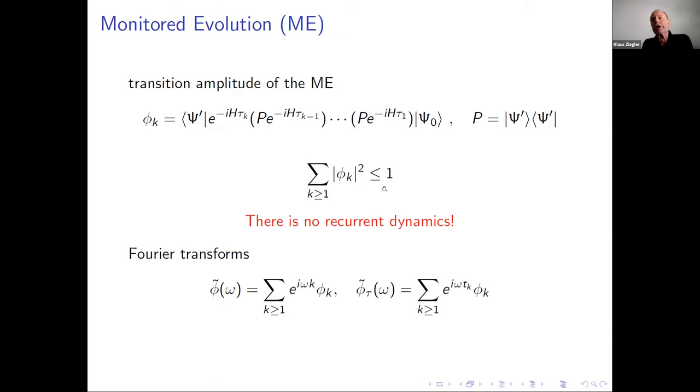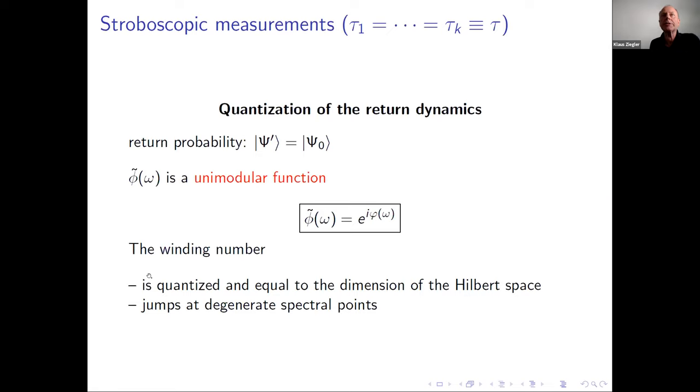In order to study this situation, we introduce the Fourier transformation of this amplitude. The interesting point, which was already observed in this early work by Grünbaum et al., is that this Fourier transform amplitude is a unimodular function - it just has a phase. The phase is a winding number, a many-valued function. It is quantized interestingly. If we go around with omega from zero to 2π, we have a quantization which is equal to the dimension of the underlying Hilbert space. There are jumps if we have spectral degeneracies, for instance, for phase transitions.